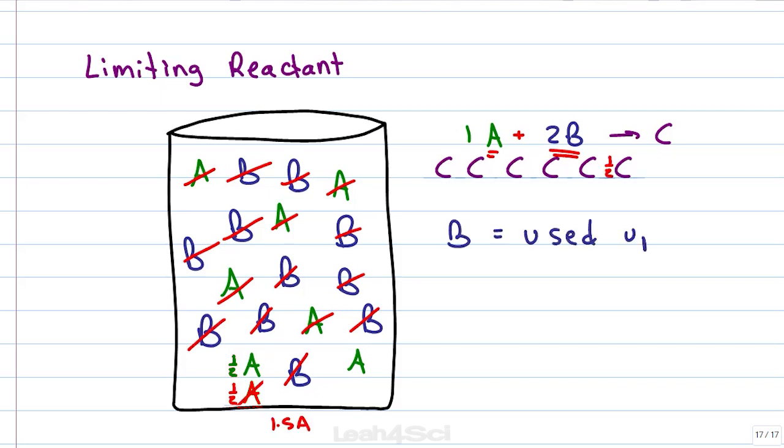This means that when B is used up, I still have 1.5 A left over, that means I have an excess of 1.5 A and in the process of using up all of B, I had 5.5 products or a yield of 5.5 C come out of this reaction.